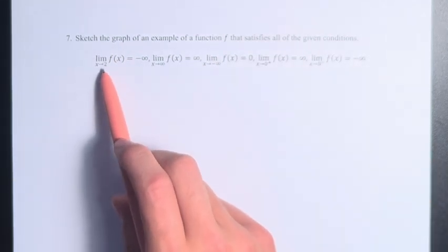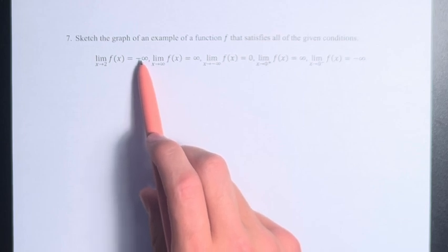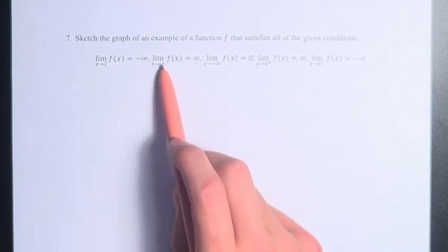we're asked to sketch the graph of an example of a function f that satisfies all of the given conditions. We have the limit as x approaches 2 of f(x) is equal to negative infinity. The limit as x approaches infinity is equal to infinity.